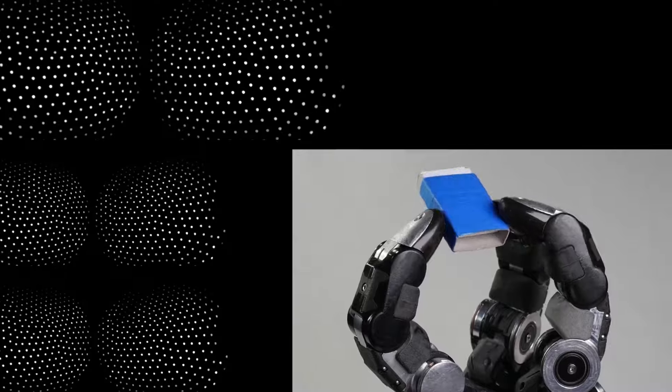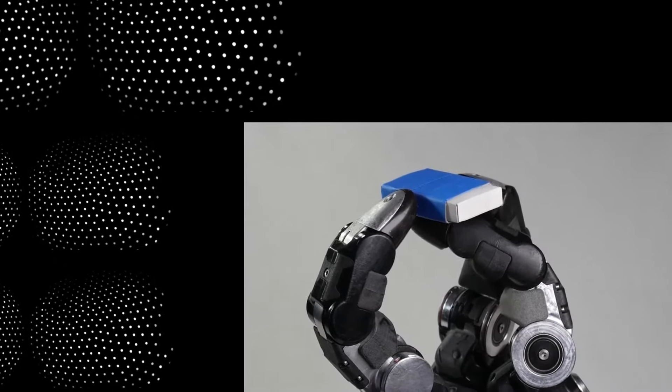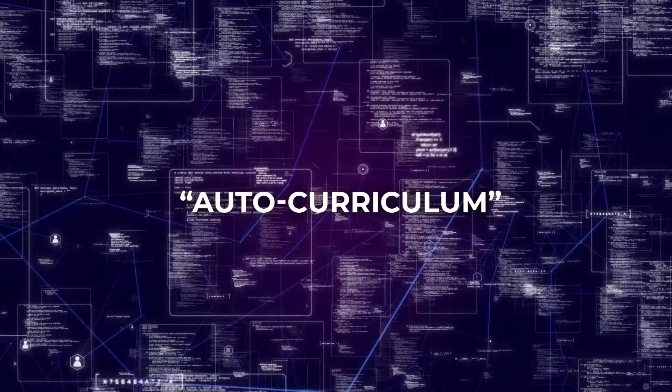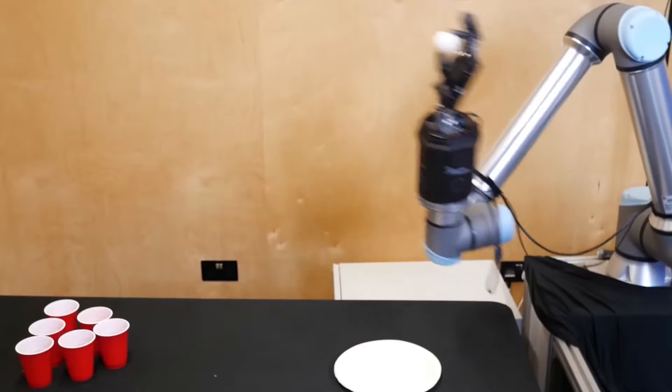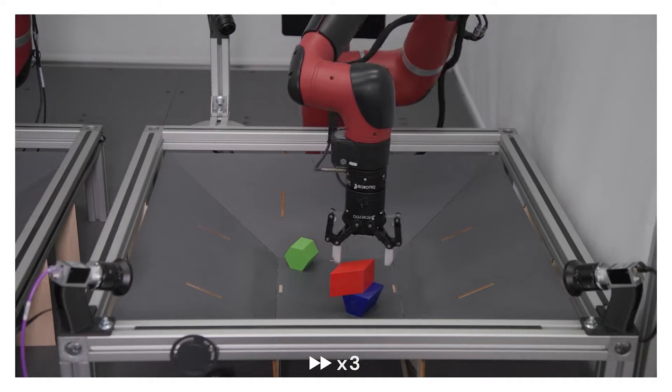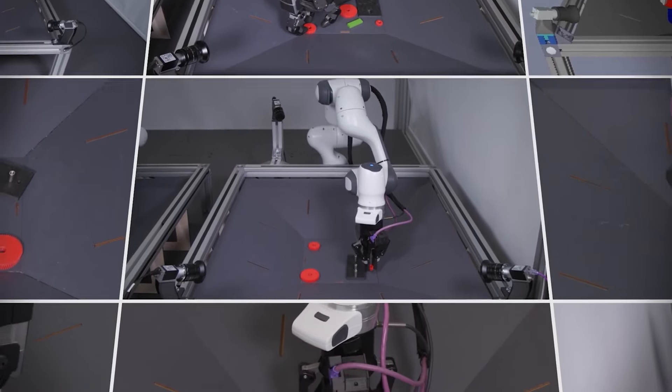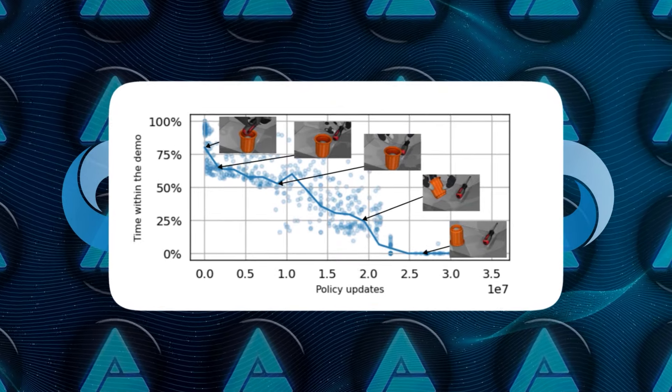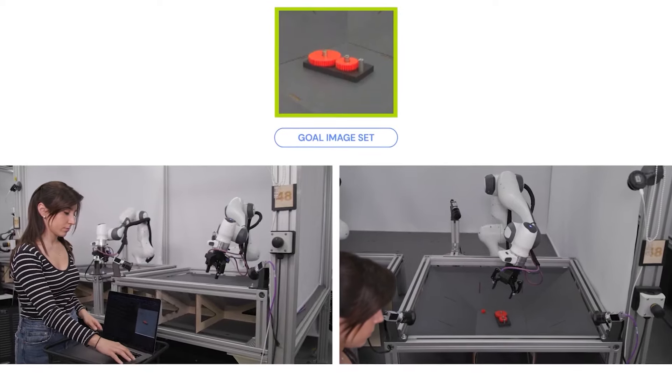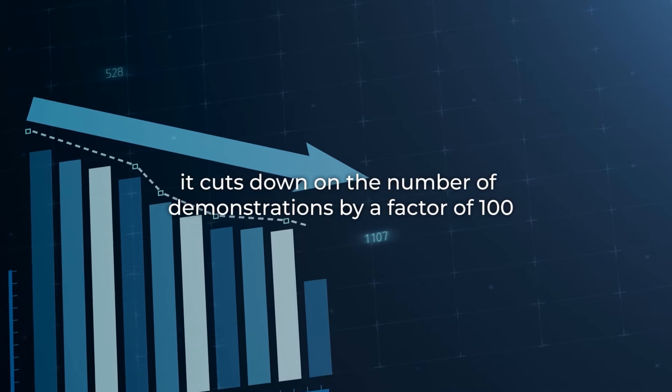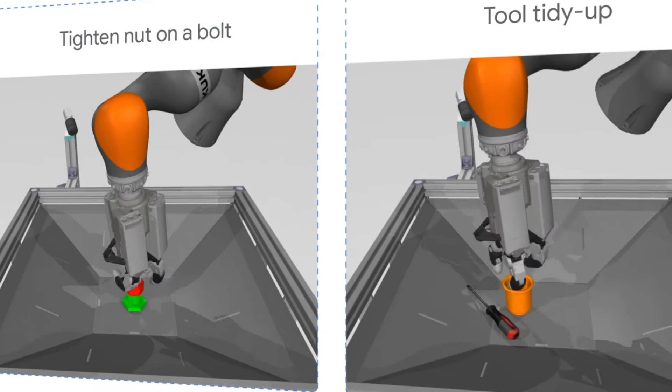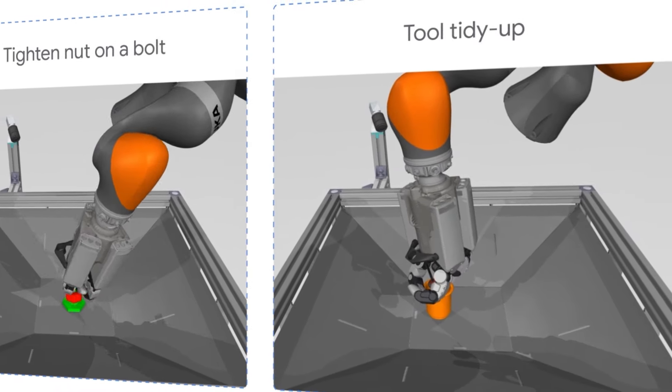The system uses an auto-curriculum learning strategy. This means it doesn't throw the robot into the most challenging tasks right away. Instead, it starts with simpler tasks and gradually increases the complexity as the robot improves. This progressive learning approach is highly efficient, requiring far fewer training demonstrations compared to conventional methods. In fact, it cuts down on the number of demonstrations by a factor of 100, allowing robots to learn from just a handful of examples while still achieving extremely high success rates.